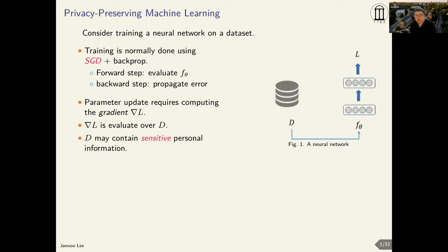During the backward step, this error information is propagated back through the network from the top to bottom, layer by layer. Using the gradient calculated by this back propagation algorithm, we can update the parameters of our neural network.